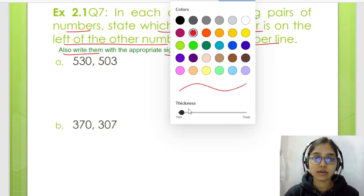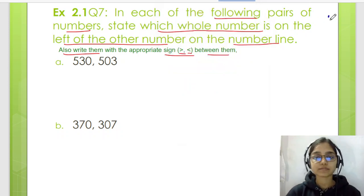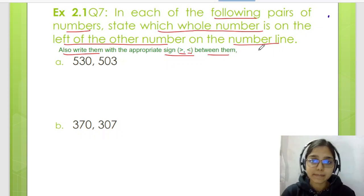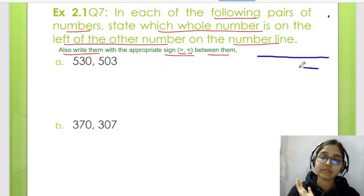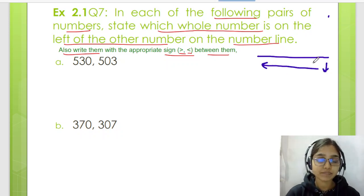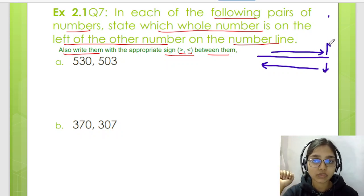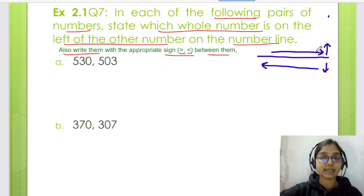Before solving this sum, let us first recall few things which we have already covered while doing the introduction for this chapter. On a number line, if we move left, the number value is reduced. And if we move right, the number value is increased.